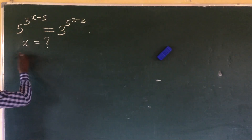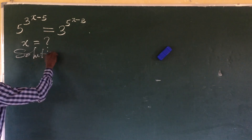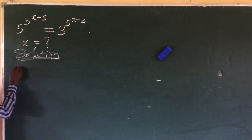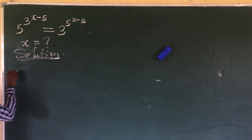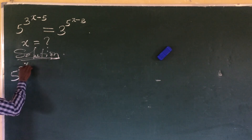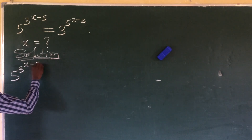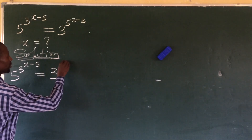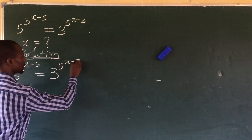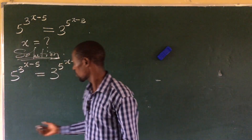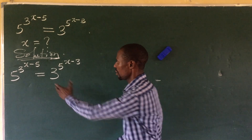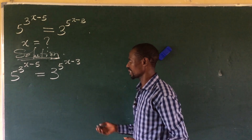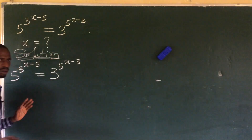So let's take our solution to this problem. We put down the equation: 5 to the power of 3, further raised to x minus 5, equals 3 to the power of 5, further raised to x minus 3. Now if we look at this, we could rewrite this expression, but that would take a longer time. So what we'll do is apply logarithm straight to this expression.